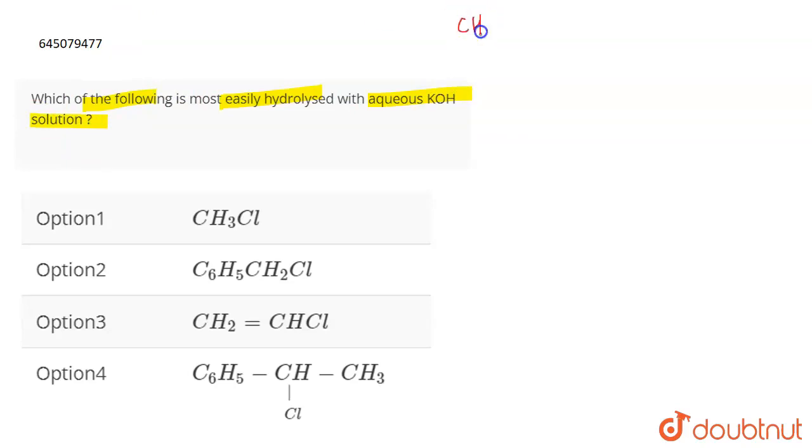Now what really happens is that suppose we have CH3Cl. When KOH is acted upon this, Cl being a good leaving group leaves and forms a carbocation CH3 positive. And then this OH negative acts as a nucleophile and attacks the carbocation which is formed. So what is going to happen actually, carbocation is going to get formed in each of these cases.